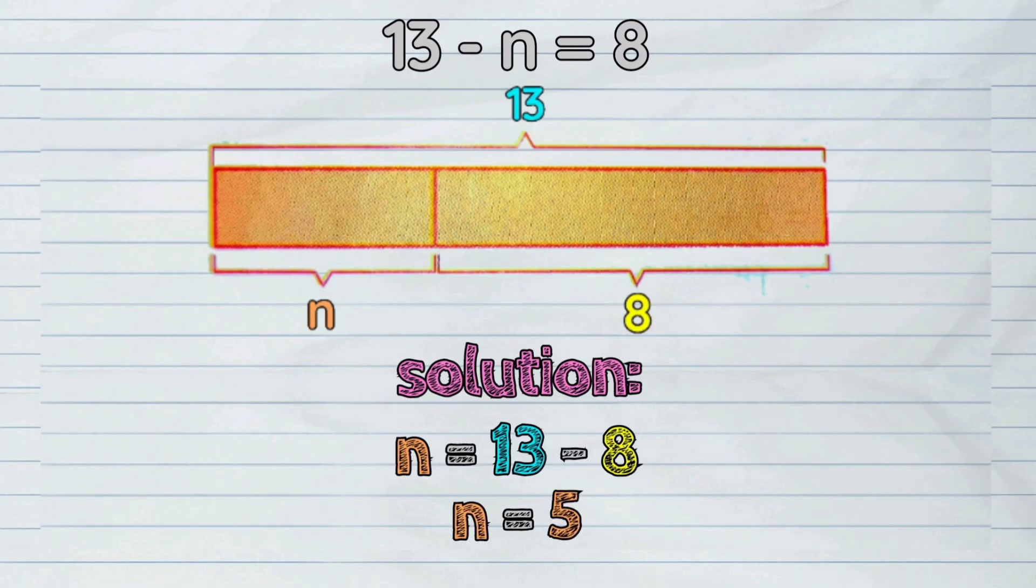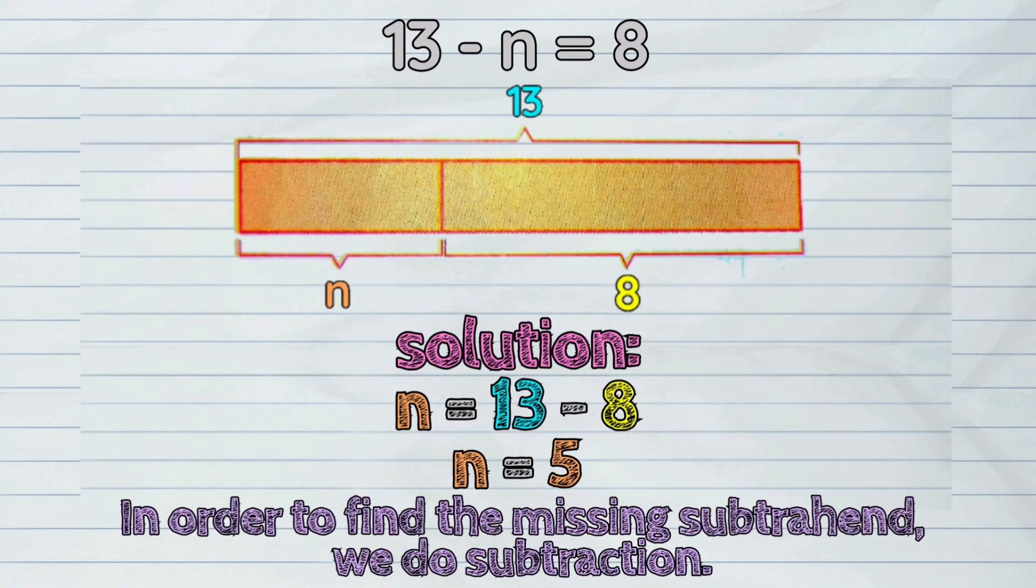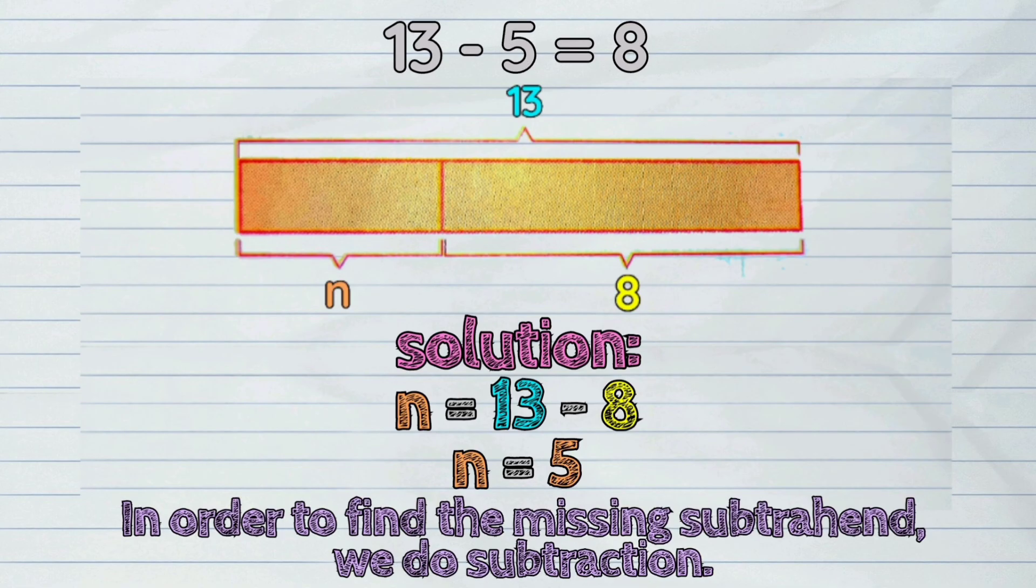Therefore, we can conclude that in order to find the missing subtrahend, we do subtraction. So, it's 13 minus 5 equals 8.